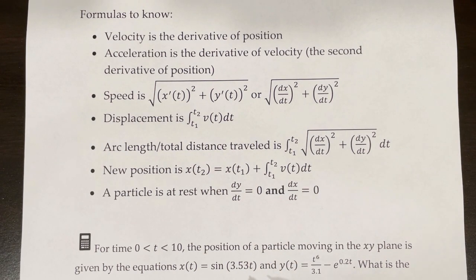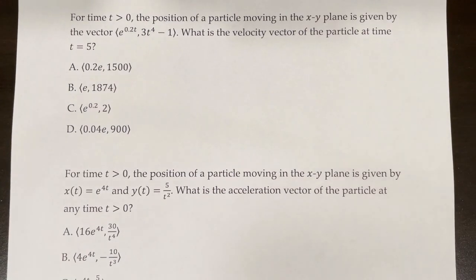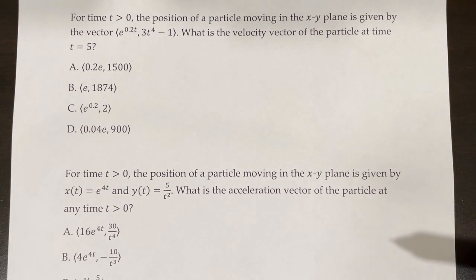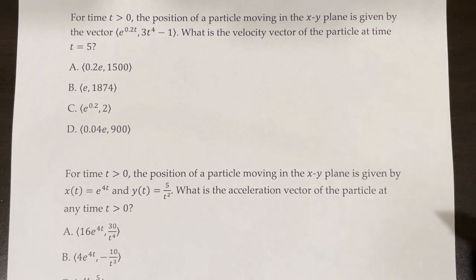In this video, we're pretty much just going to be working through a whole bunch of applied multiple choice and free response questions related to this topic. For time t greater than 0, the position of a particle moving in the xy plane is given by the vector (e^(0.2t), 3t⁴ − 1). What is the velocity vector of the particle at time t equals 5?